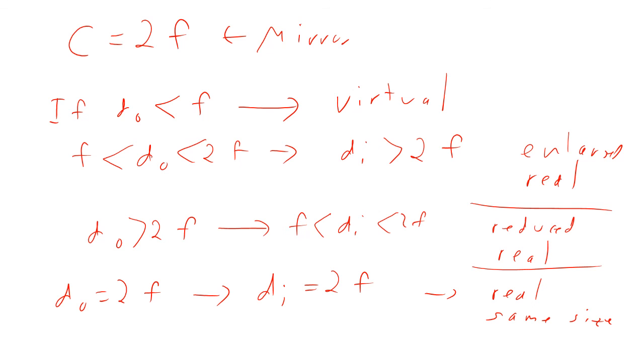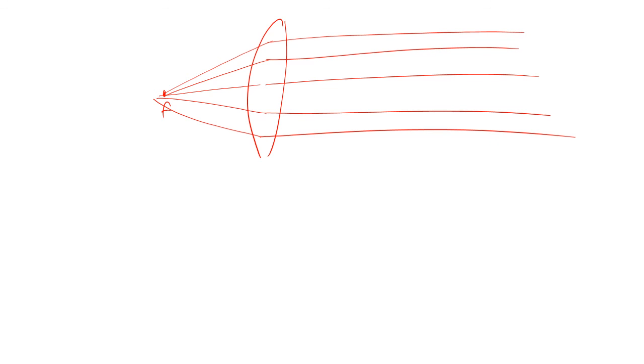So now the question is, if Do equals F, what happens? So we get a lens, we put a light source right here, right at F. So what would happen is, light comes up, and it goes off that way. Every time it hits the lens, it goes out straight. And so again, 1 over F equals 1 over Do plus 1 over Di. If Do equals F, then 1 over Di has to equal 0. That implies Di is going towards infinity.